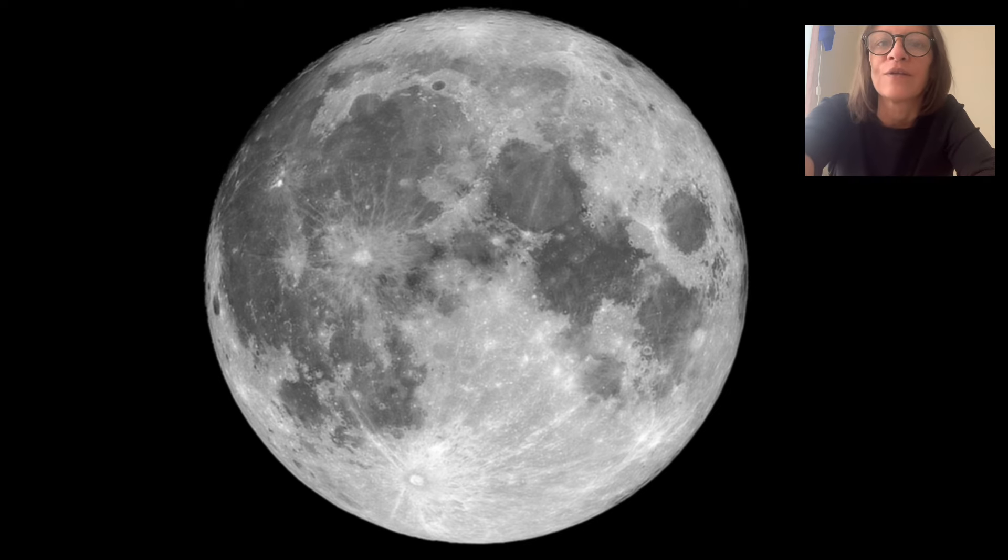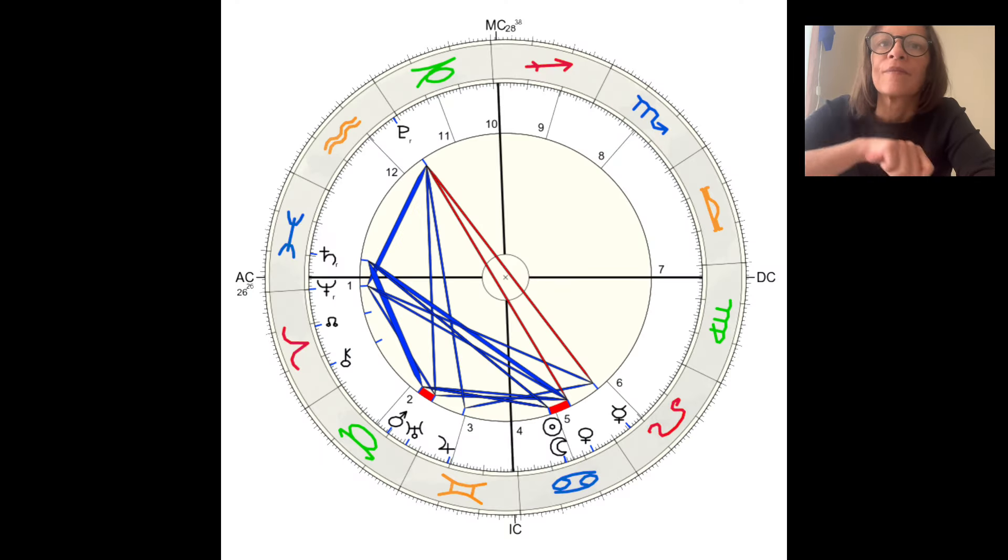Now, let's look at the chart. I noticed that it has three main loops of energy. We're going to break them down, starting with the first loop called a minor grand trine.